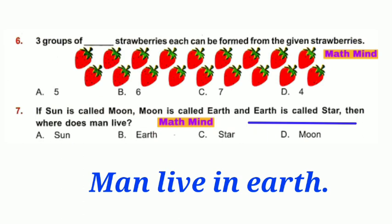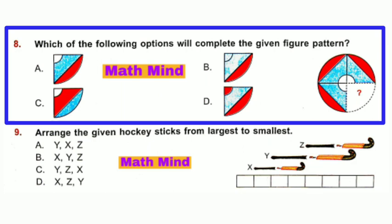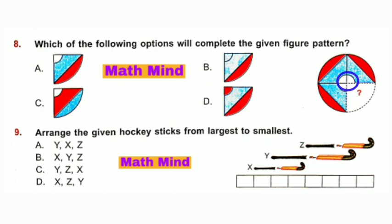Question number 8: Which of the following options will complete the given figure pattern? This circle is not shaded, so options A and C are correct, B and D are cancelled. This square is blue in color, so option A is correct and C is cancelled.